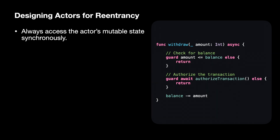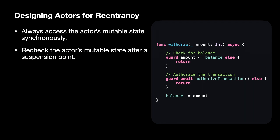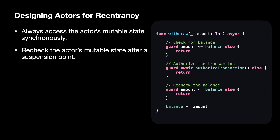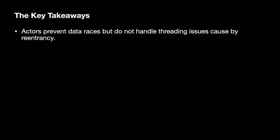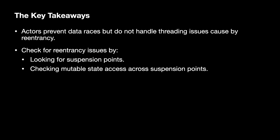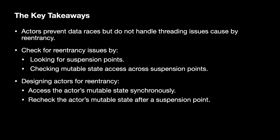But in some cases that might not be possible. In this kind of situation, what we can do is re-check the actor state after a suspension point, to make sure nothing changed while the task was suspended. For our example, all we need to do is re-check the account balance after authorizing the transaction. To recap: actors are not thread safe in all respects. They prevent data races, but do not protect against threading issues caused by reentrancy. You can check for reentrancy by finding suspension points and checking mutable state access across them. Always design for reentrancy — access mutable state synchronously, or if that's not possible, re-check the actor state after a suspension point.